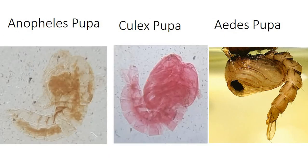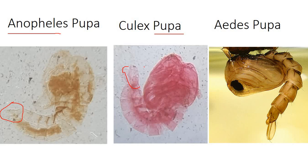In real-life scenarios, larvae and pupae can often be identified based on the type of water source present. Among the life stages — egg, larva, pupa, and adult — the pupa is the most difficult stage to identify. For pupae: when there is no siphon tube, it is Anopheles; when the respiratory trumpet is apparently long and slender, it is Culex; when it is poorly developed, it is Aedes.